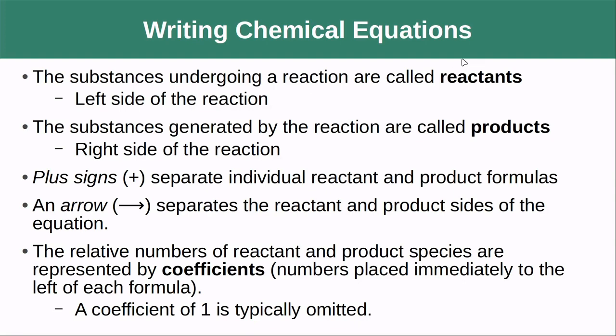A little bit of the language that is around chemical equations. Substances that are on the left that are going to undergo a chemical reaction are called the reactants. The substances on the right that are the products are called the products. A plus sign separates the individual reactant and product formulas and an arrow separates the left and the right side. All of our reactants will be to the left of an arrow. All of our products will be to the right of an arrow.